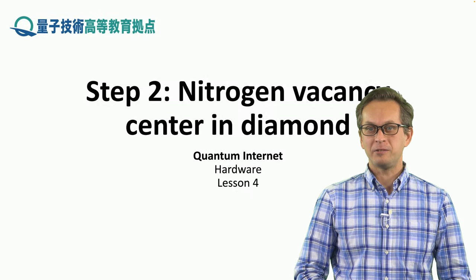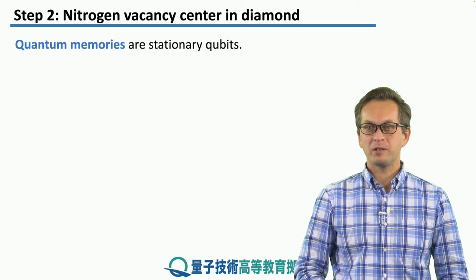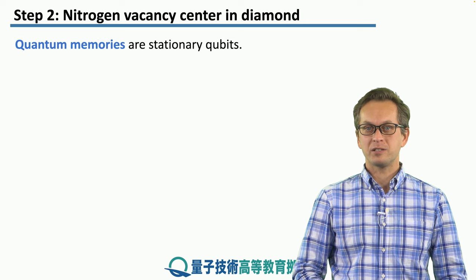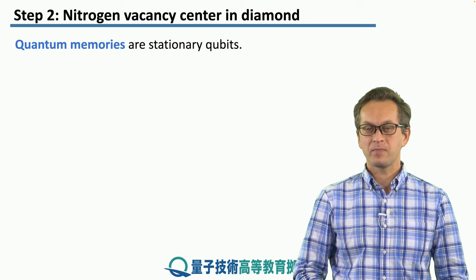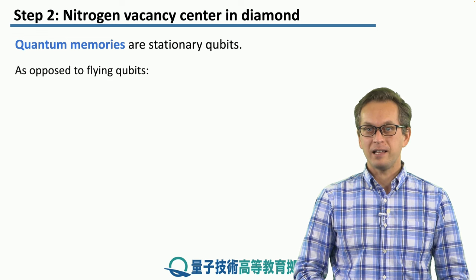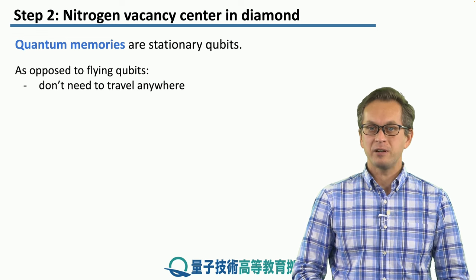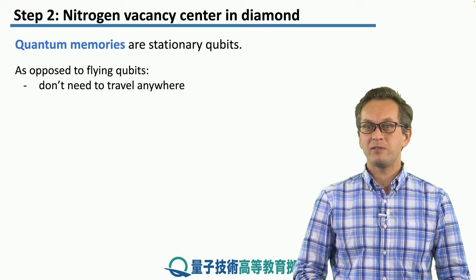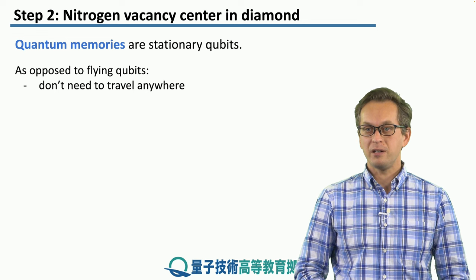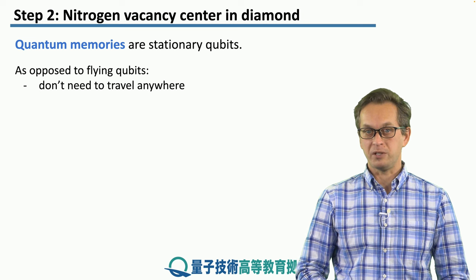Step 2: Nitrogen vacancy center in diamond. With this step we're going to begin our discussion of stationary qubits that represent quantum memories. Unlike flying qubits, stationary qubits don't need to travel anywhere. Their job is to sit in a network node and do their quantum job — store information.